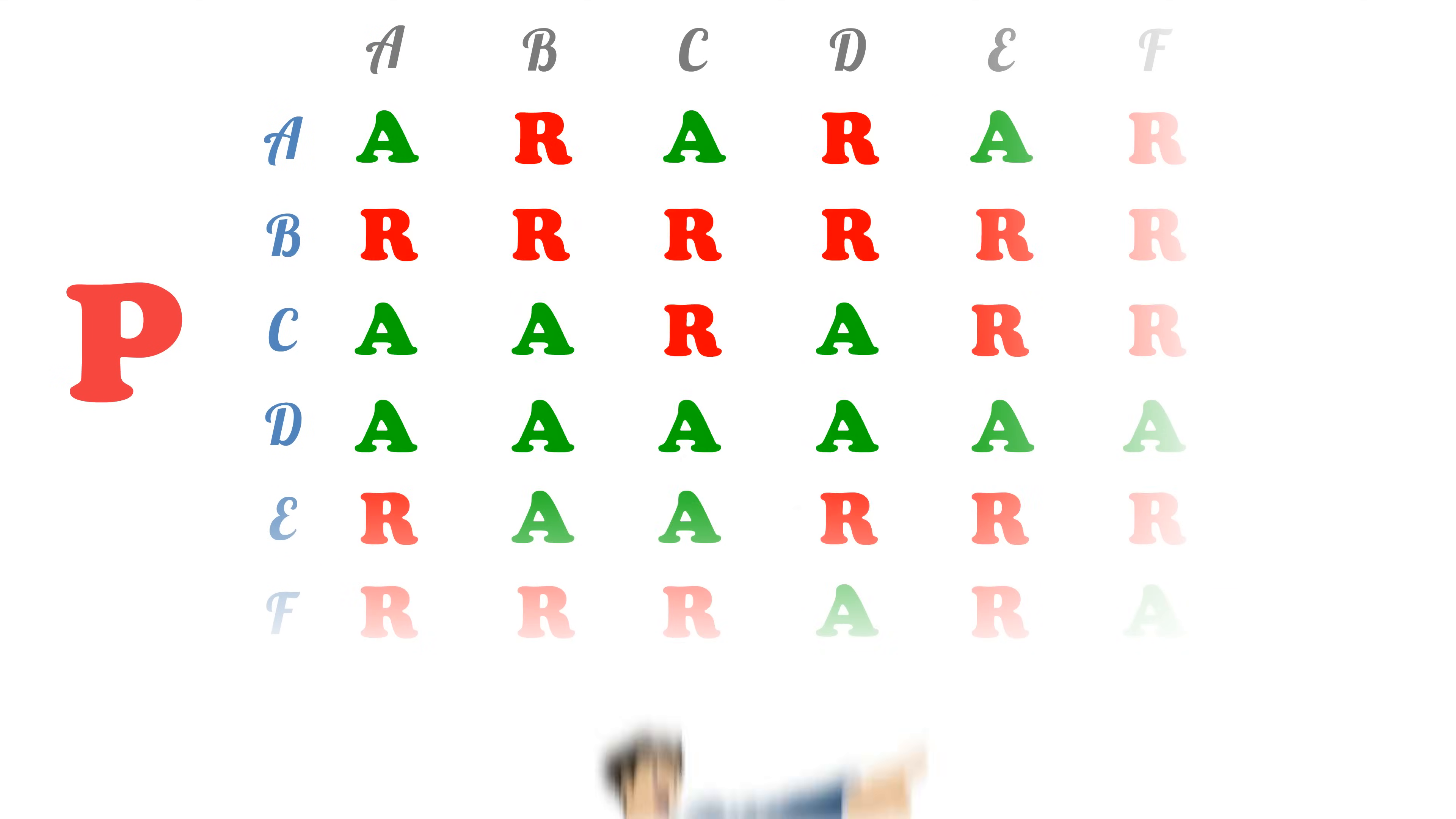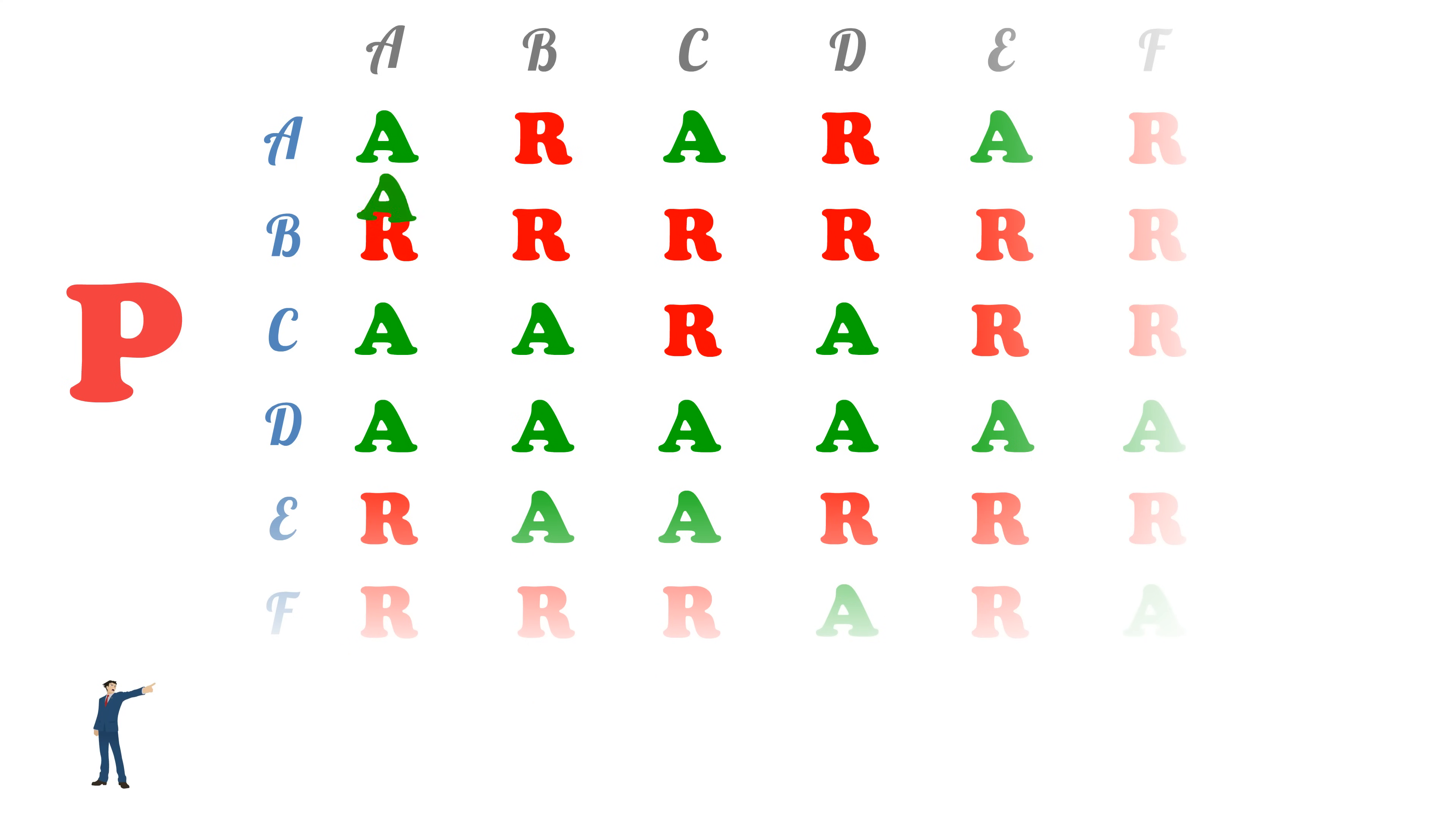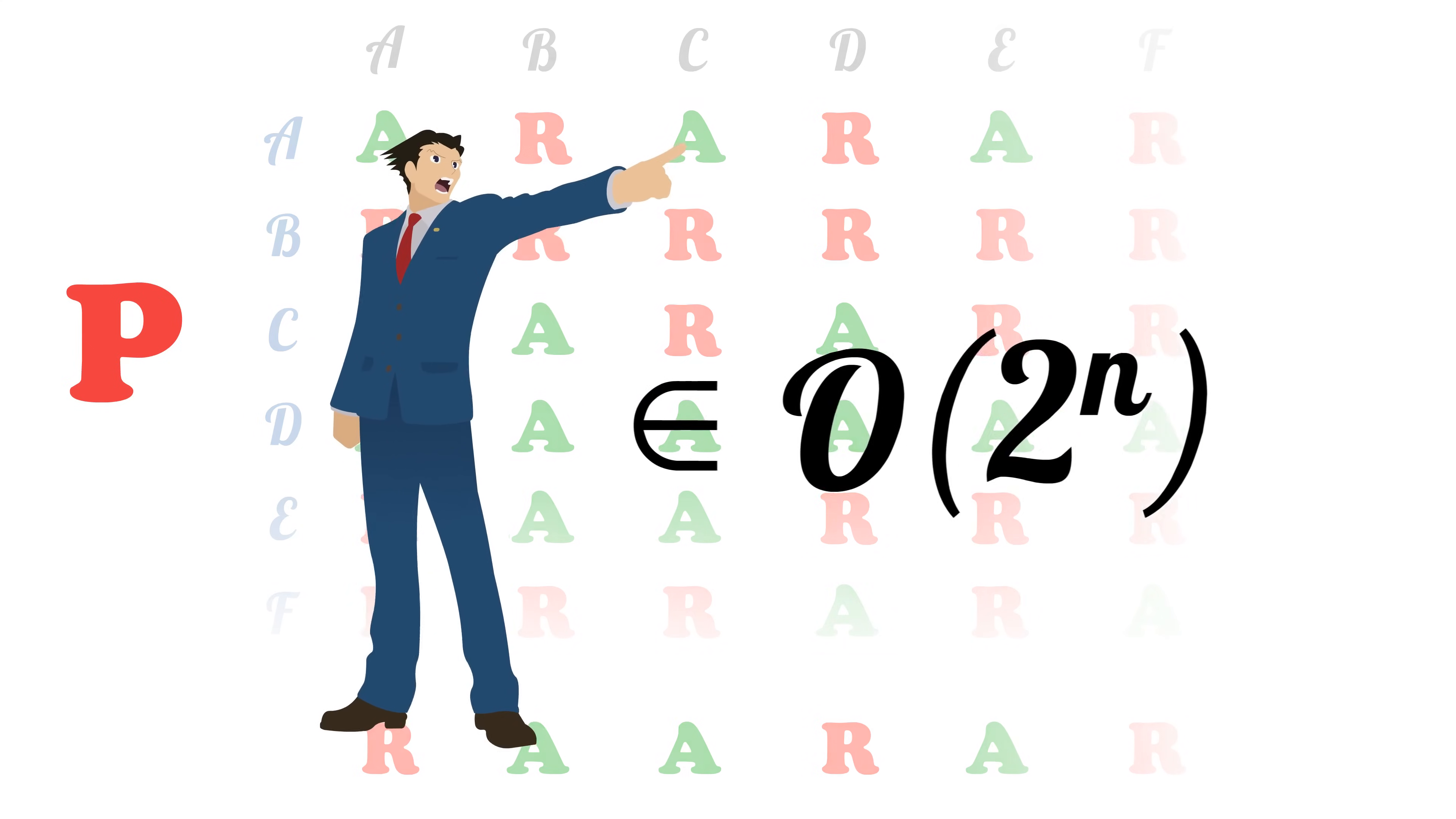If we list out all possible programs in P and inputs to the execution machine, we can see that our contradictor is just doing the opposite of whatever is on the diagonal. This specific implementation of our contradictor takes exponential time since the executor takes exponential time.